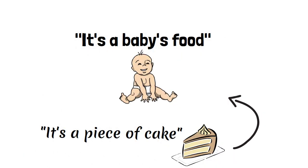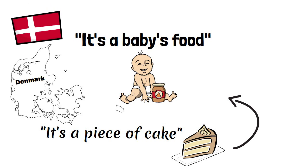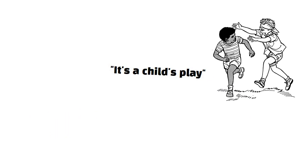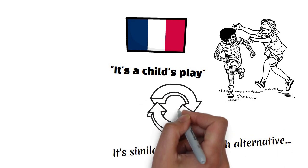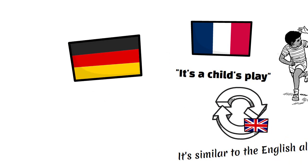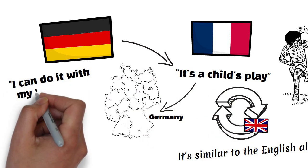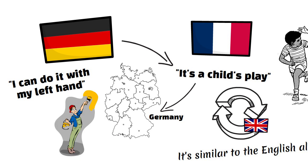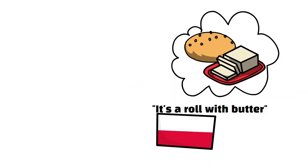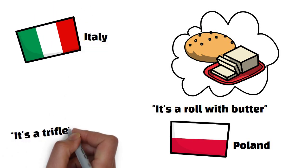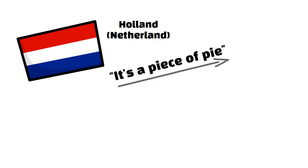It's a piece of cake is loosely translated as 'it's a baby's food' in Danish, 'it's a small sausage' in Finnish, 'it's a child's play' in French. This is of course similar to the English alternative. Germans also use the same idiom as the French. However, in some regions of Germany they say 'I can do it with my left hand.' 'It's a roll with butter' is said in Poland. The Italians will say 'it's a trifle' and the Dutch would say 'it's a piece of pie,' very close to our cake.